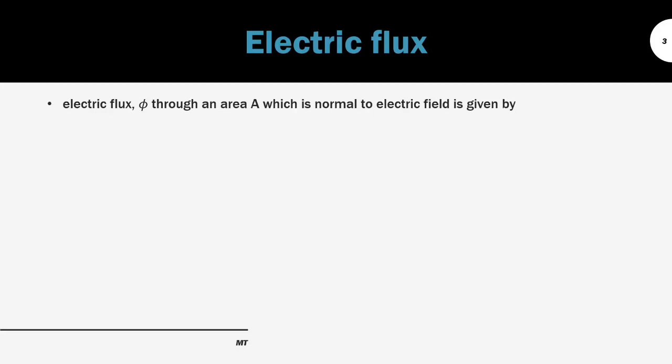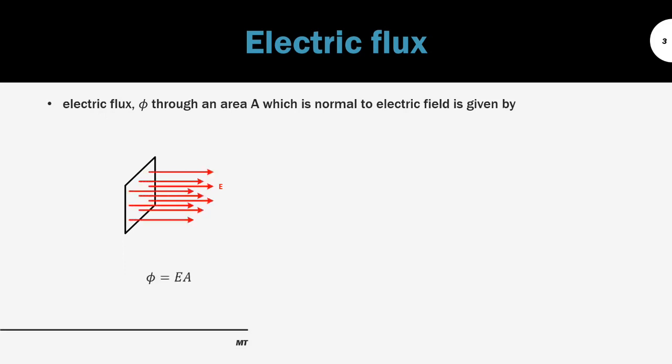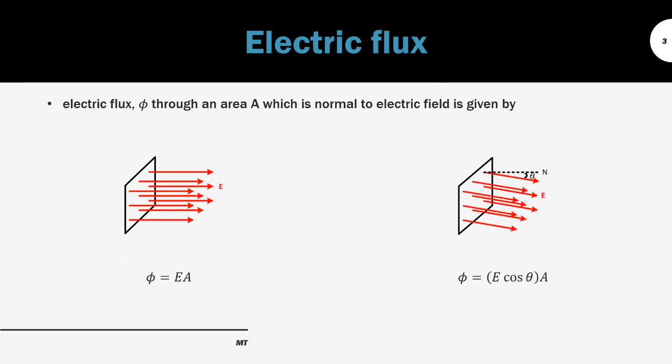First, we understand what is electric flux, also known as the electric field line. When you have the electric field penetrating through a surface area, the electric flux through that area is given by phi equal to EA. If the electric field is not perpendicular to the surface, we can apply trigonometry and get the normal component of E, which is E cos theta. So the formula for phi is E cos theta times A.